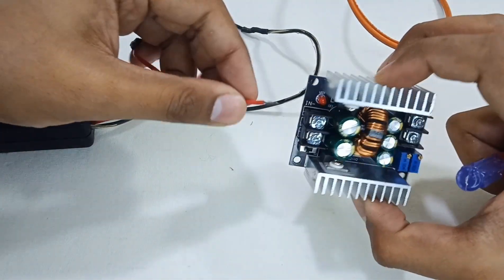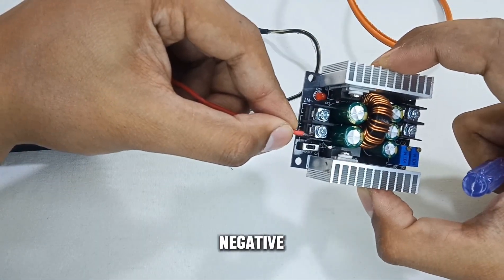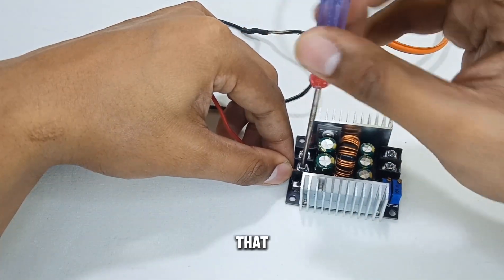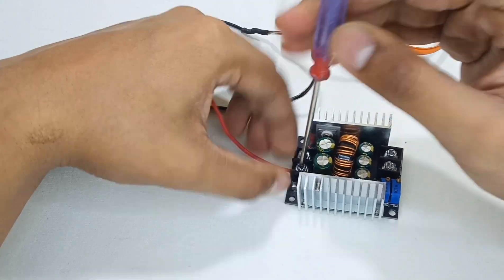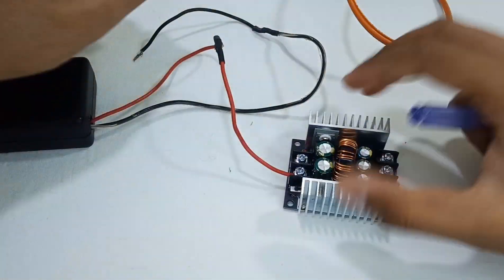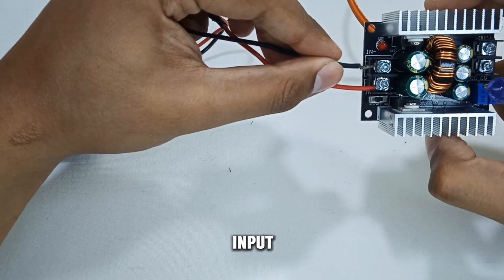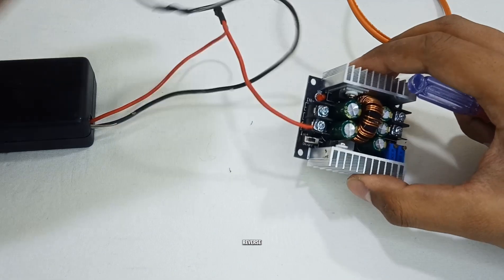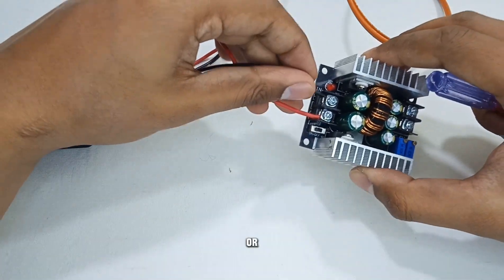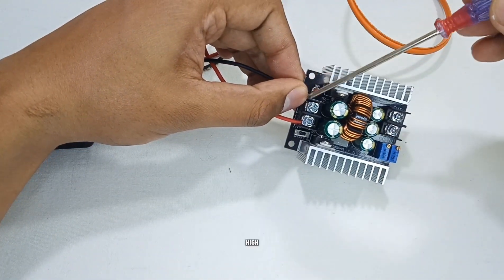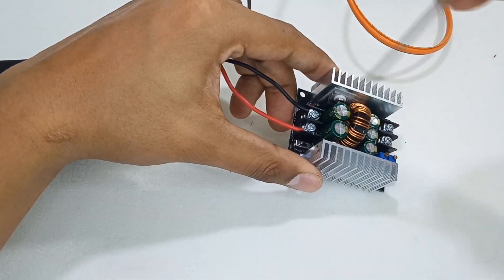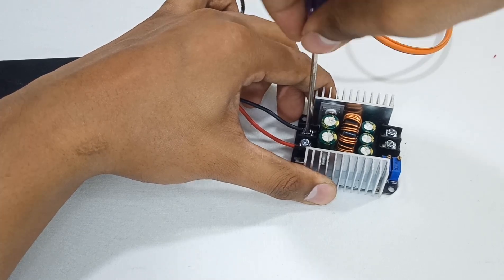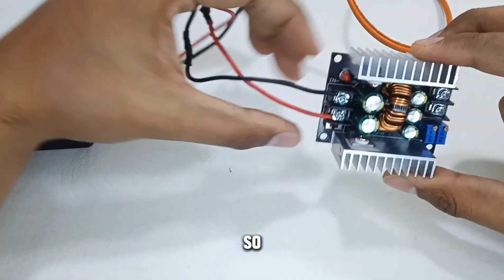Let's connect the wires, positive to positive and negative to negative. Please make sure that you have connected the positive input and negative input correctly because these modules don't have reverse polarity protection. Or you can also connect a high ampere diode on the input side.